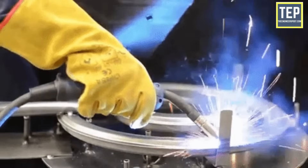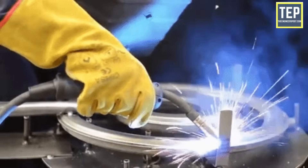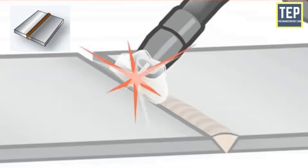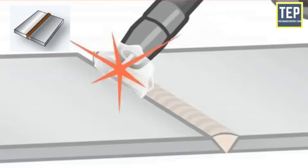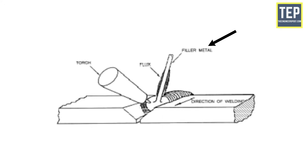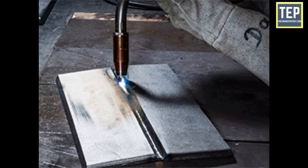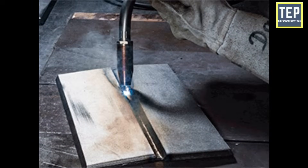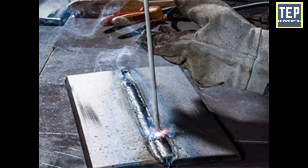Welding is a permanent joining process in which two pieces of metal are joined together to form one piece by heating the metals to their melting points. Additional metal, also called filler metal, is added during the heating process that helps to join the two metal pieces together. In general, welding is a process in which two metal pieces may be joined by heating them to a high temperature enough to fuse the metals.